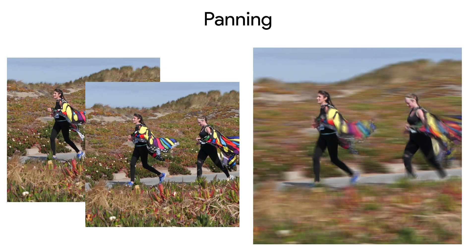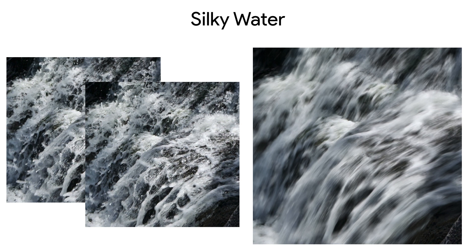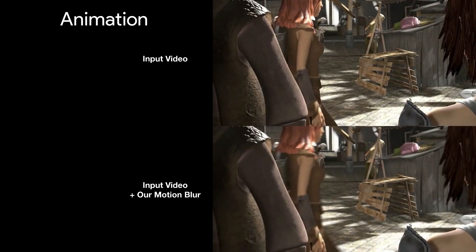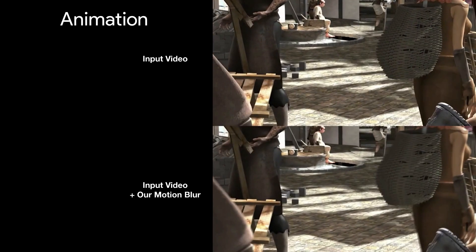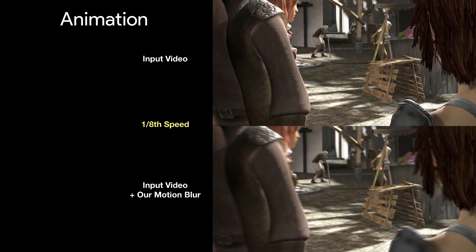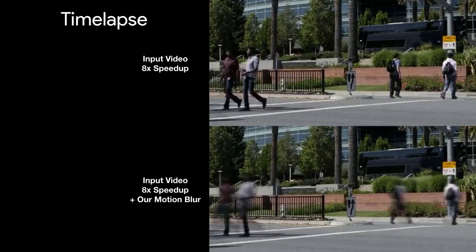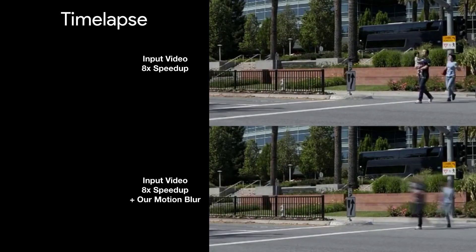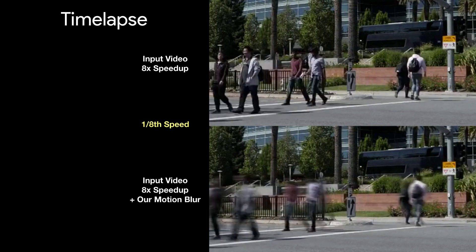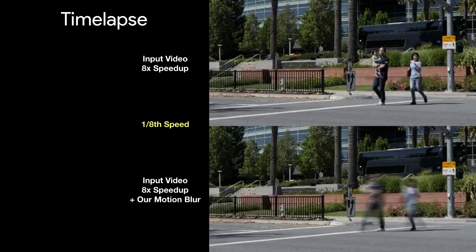Now we'll show some potential use cases of this technology. Motion blurring the background while keeping a subject sharp is an effect called panning and is common in action photography, and also for motion blurring the background while making water appear more smooth. Our method can also be used as a more efficient way to add motion blur when rendering animations, and to create a time lapse from regular video footage, where the motion blur helps the time lapse look more natural and smooth. Our method has many other applications to photography and video effects, and can also be used to generate training data for motion de-blurring, and as a visual cue for image and video understanding.